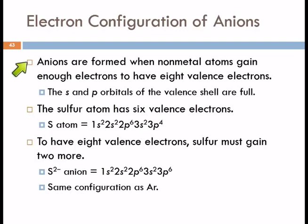So what we observe is that anions are formed when non-metal atoms gain enough electrons to have eight valence electrons. In that situation, the s and the p orbitals of the valence shell are full.